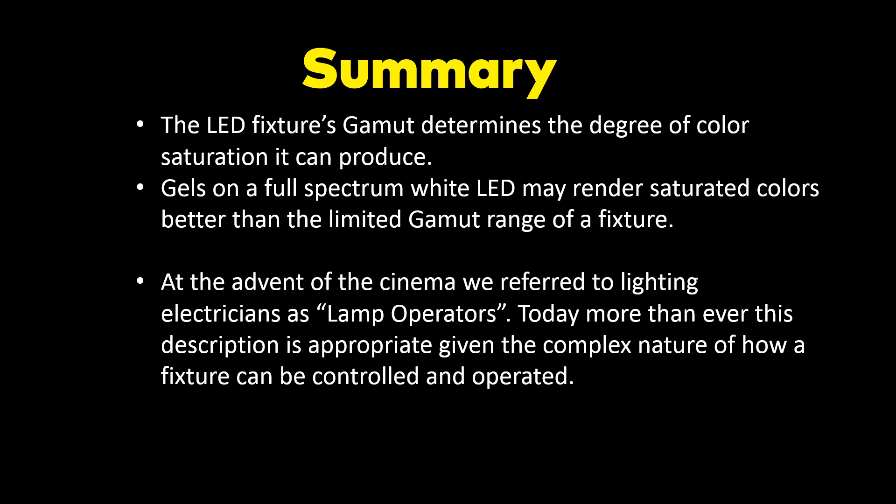An LED fixture's gamut determines the degree of color saturation it can produce. If it's a very large gamut with multiple color points pushing to the outside extremities of the CIE color chart, you may see those colors — but you may also lose those colors depending on whether you're in Rec 709. You can go to all the trouble of showing your director wonderful colors, and once it goes into 709, none of those colors are there — they're all desaturated. So do you want to set up a false expectation, or just show them what you're actually going to work with? It's a political decision.